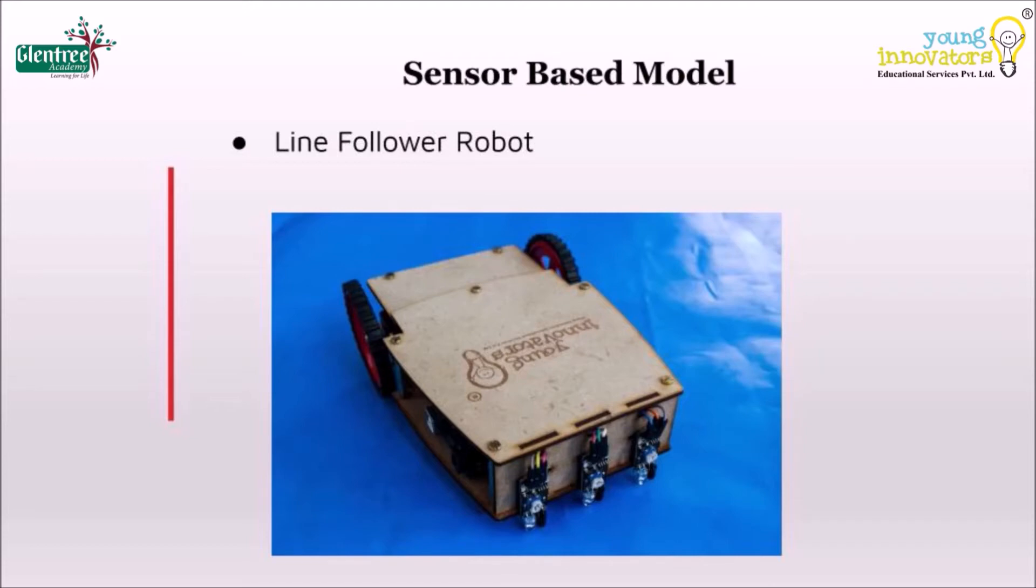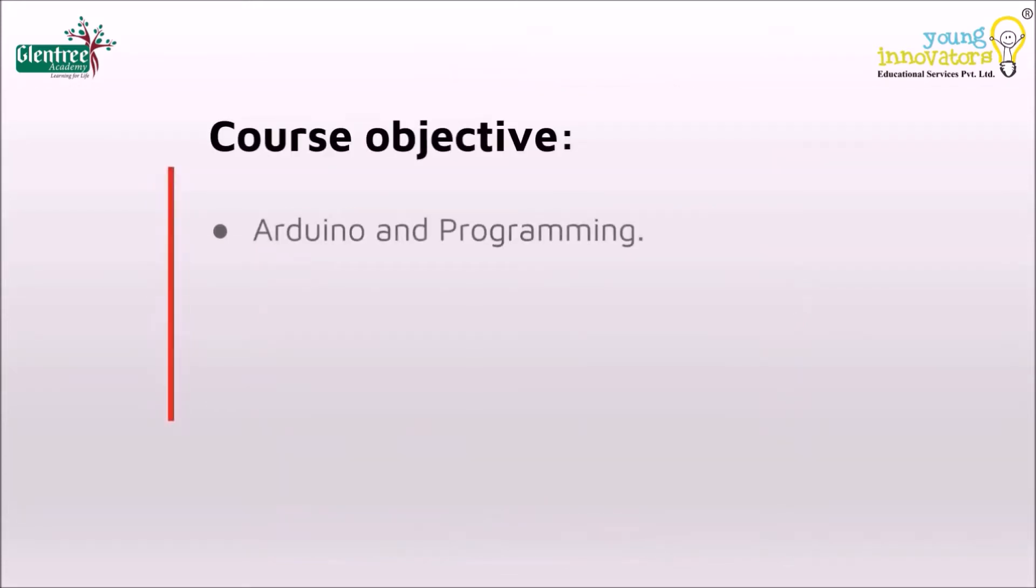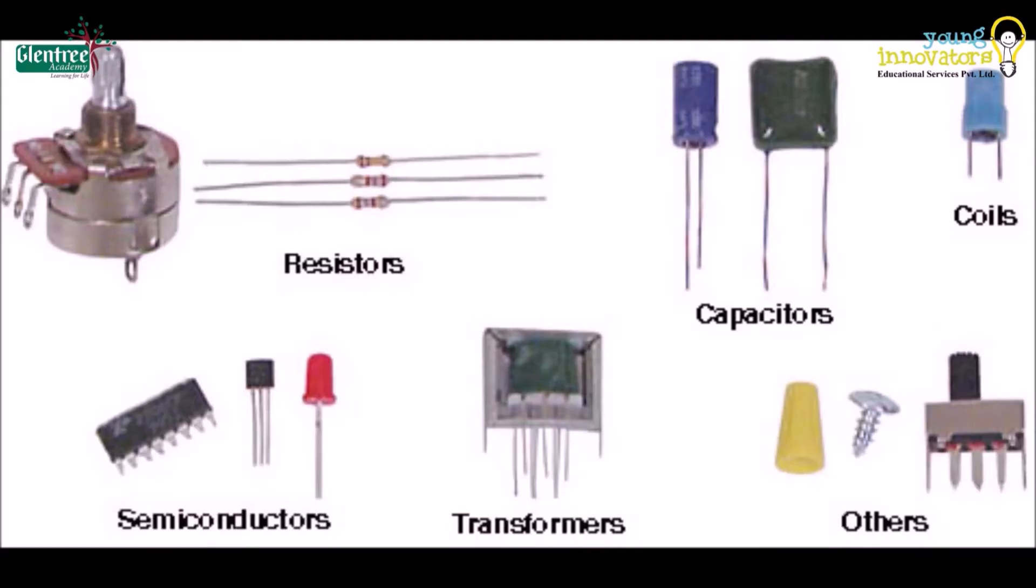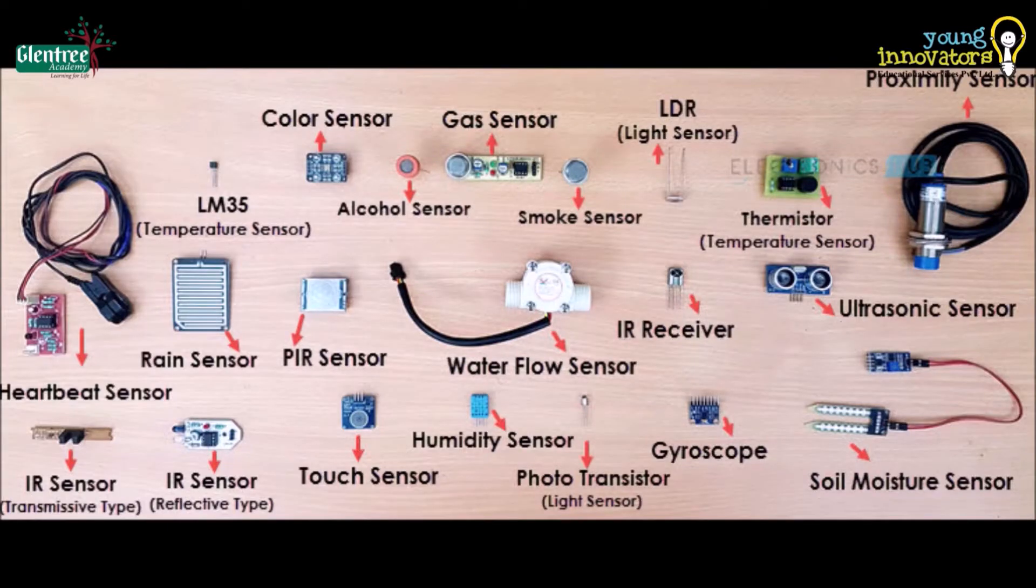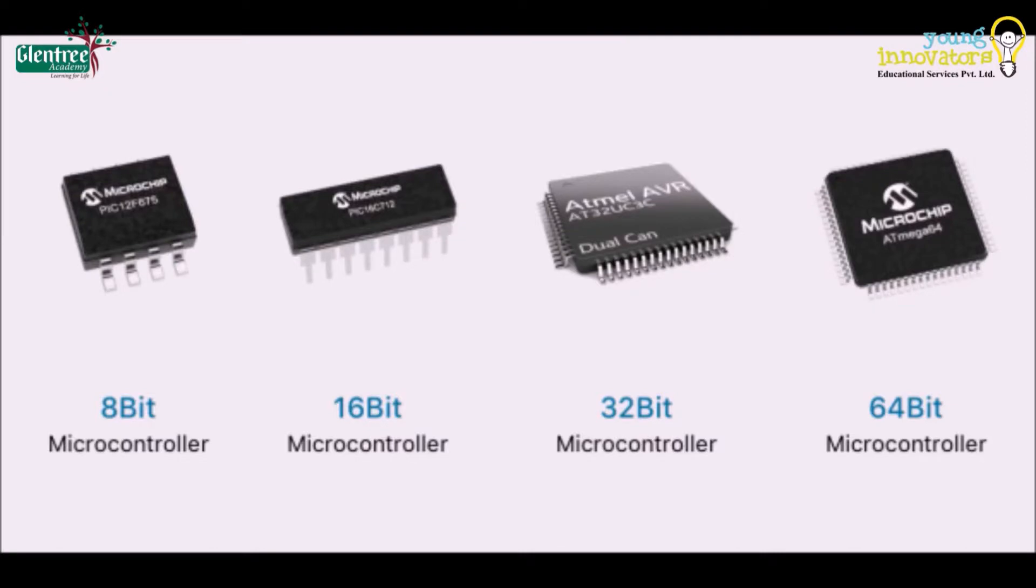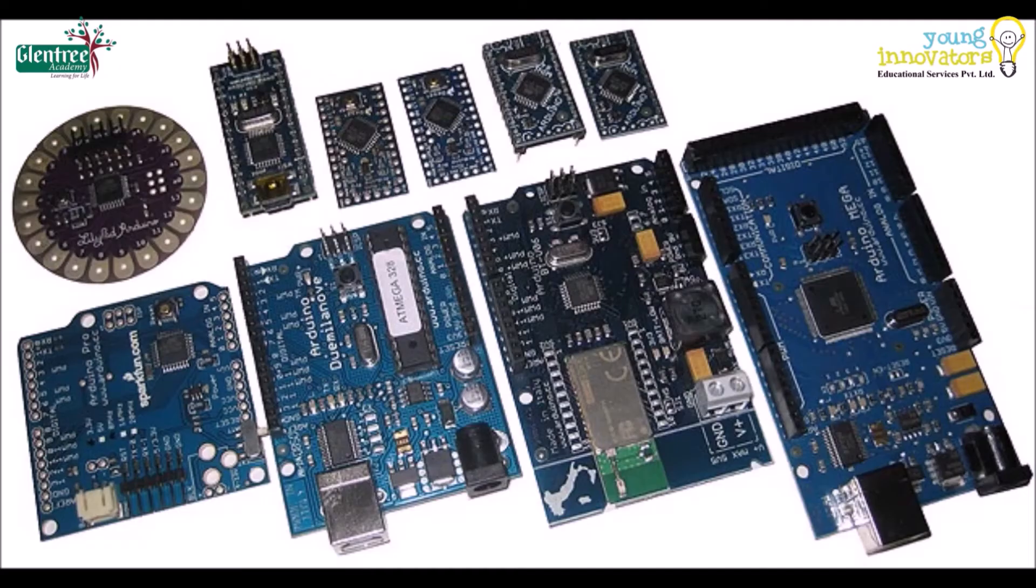Line follower is also called a path follower. To build a model we need to understand different electronic components like motors, sensors, microcontroller, and their automation. We will also be learning about hardware and software parts of Arduino microcontroller.